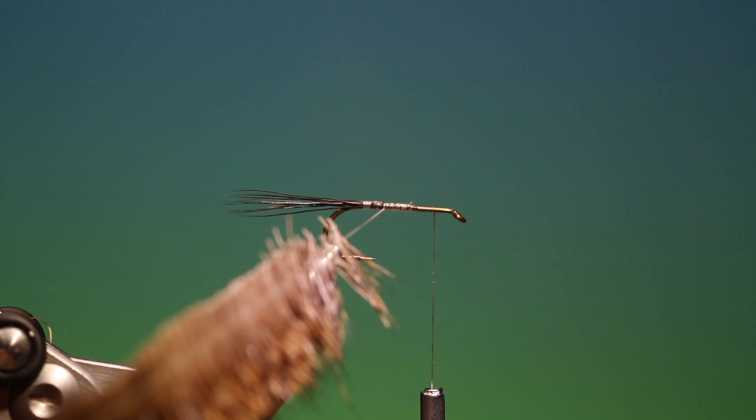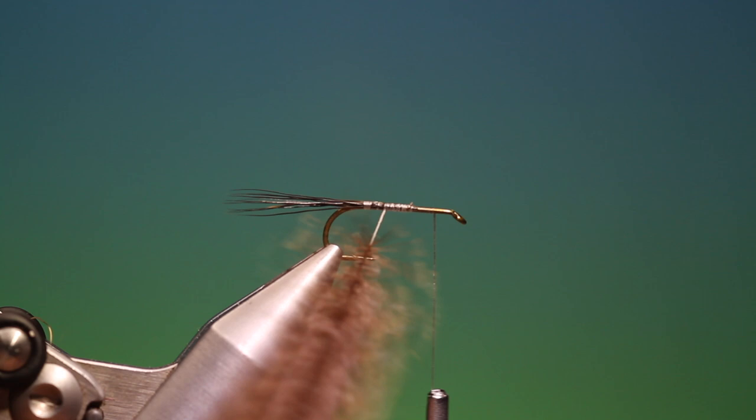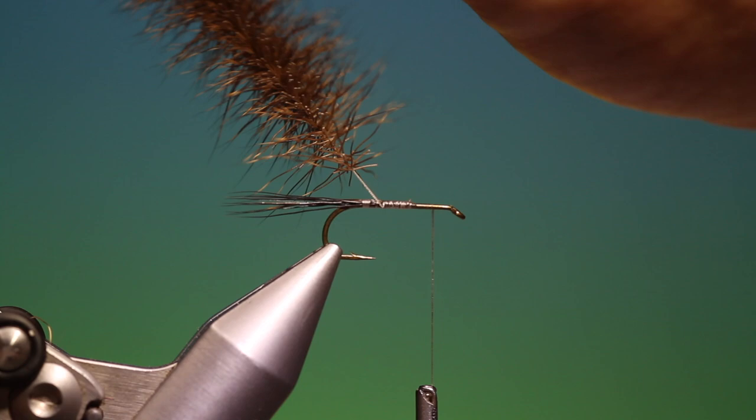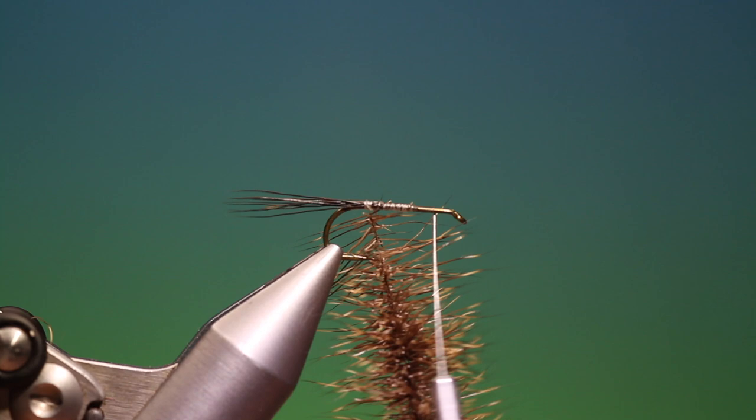And if you're using regular tying thread, the problem is that it may break here now. So what we do now is we've got a little extra tying thread here before the dubbing brush starts, so we wind ourselves back to the rear of the hook. Like so. And we make our first turn.